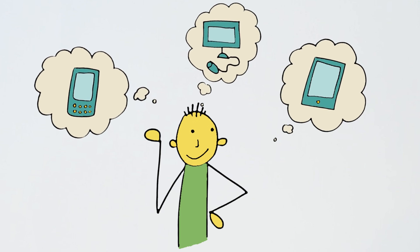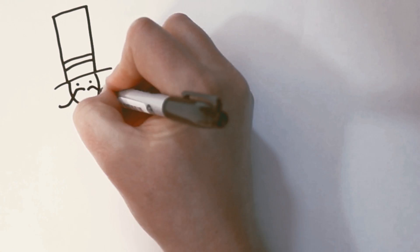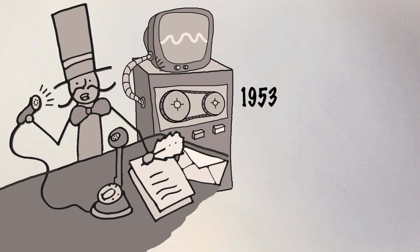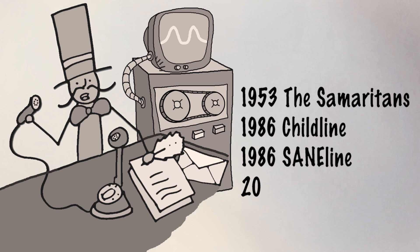First off, what do we mean by technology? The use of technology to support people emotionally isn't a new thing. The Samaritans, Childline and other phone lines have provided valuable crisis support for people for a long time.